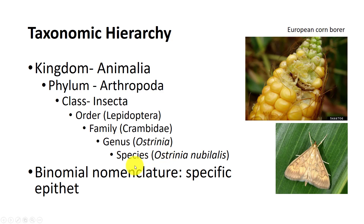You notice that the genus and species are italicized. When written, they should always be either italicized or underlined. It is important to be able to identify insects to at least order and maybe even family, since ID books are often organized around these classification levels.